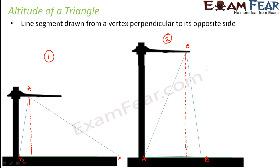How do we define altitude of a triangle? Altitude is a line segment which is drawn from a vertex perpendicular to its opposite side. That is how we define altitude of a triangle.